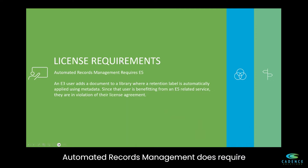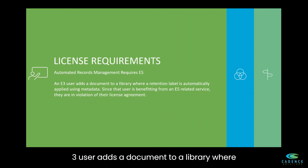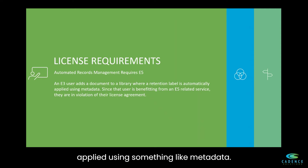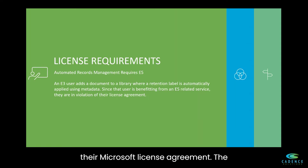Automated records management does require Microsoft 365 E5 licenses. The reason for this is if an E3 user adds a document to a library where a retention label is automatically applied using something like metadata, since that user is benefiting from an E5 related service, they are in violation of their Microsoft license agreement.